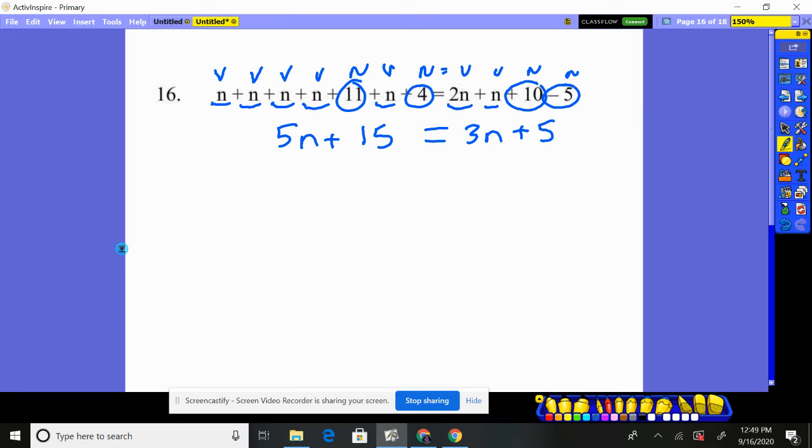So now it becomes a normal problem. Get all variables to one side, get all numbers to the other. So would you rather move three n's or five n's? I'm going to move the smaller amounts. I'm going to move three n's. That's how I'm going to start the problem. That goes away. I get two n's on this side plus 15 equals the number five.